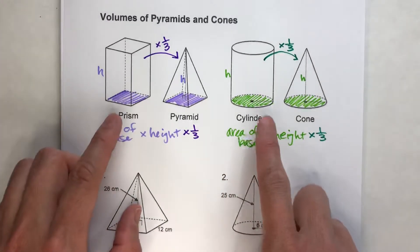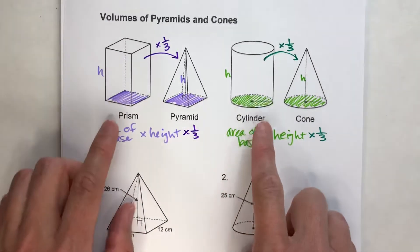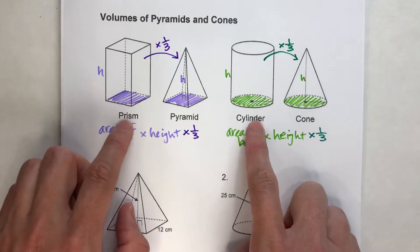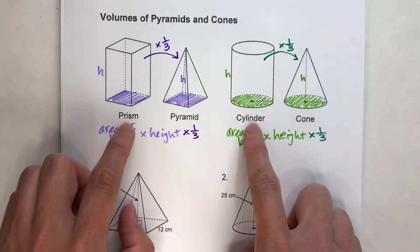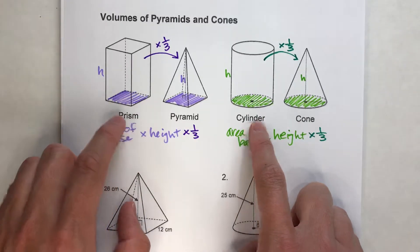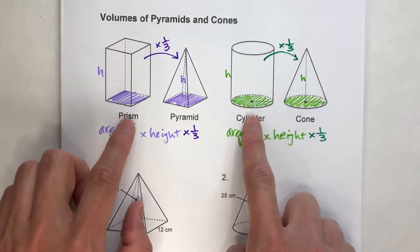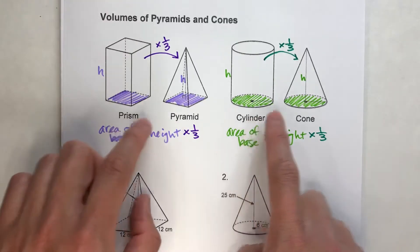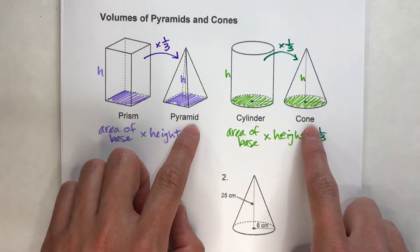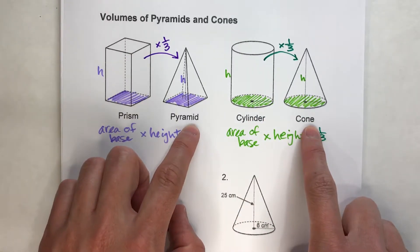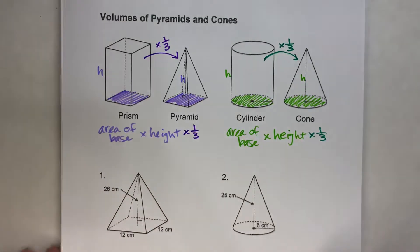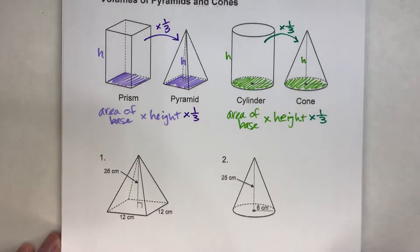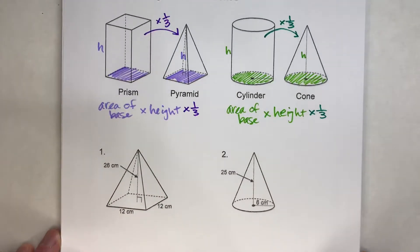You can see why it's nice to relate things back to the prism and the cylinder. Because if you can find the volume of the prism or cylinder, all you have to do is divide it by three and then you get the volume of a pyramid or a cone. Let's do a couple of examples so you can see this in action.